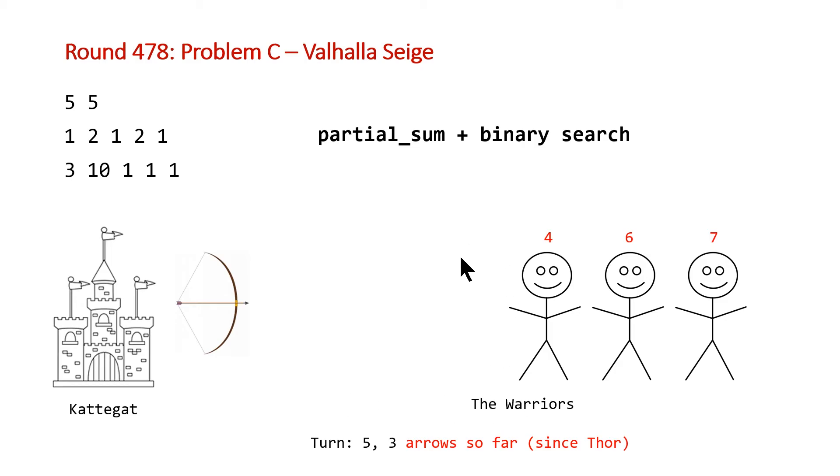And then using the lower bound function, we'll be able to get an iterator and then use distance from that iterator to the end of our vector to find out how many warriors are still standing with a small catch if we actually find the exact number that we're looking for. So this is our algorithm. Let's take a look at our code.